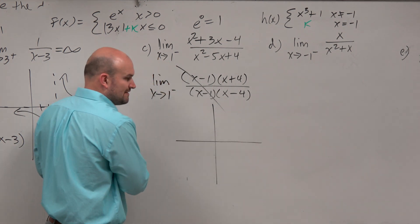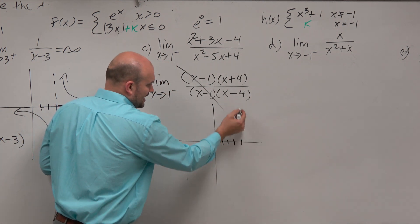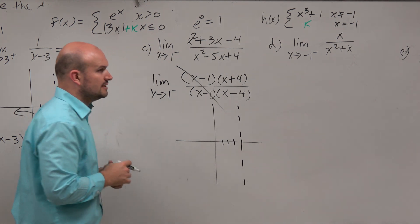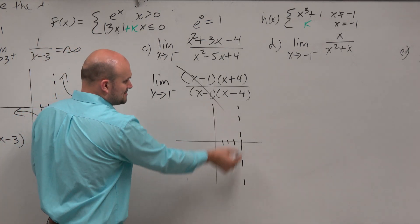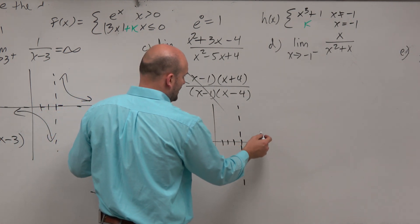I'm sure you guys could plug it in your graphing calculator and you could see what this graph looks like. I'm just going to make up some random graph. This is not correct, but I know there's an asymptote at 4 and I know there's a hole at 1.